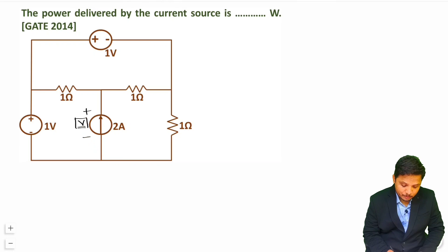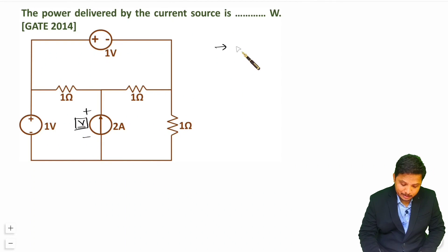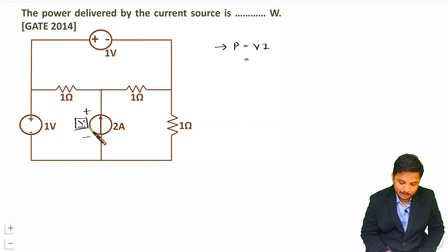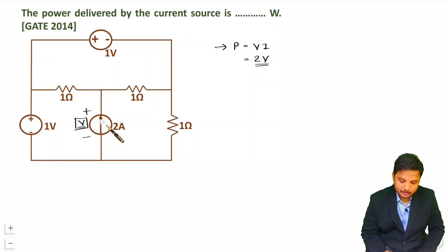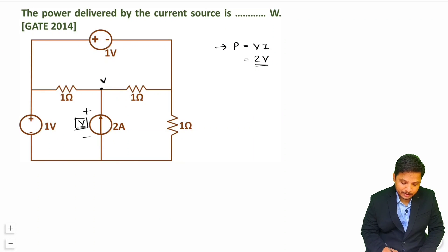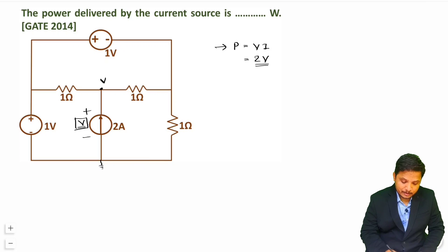If I label the voltage across the current source as V, then the power supplied by this current source is V into I, where I is 2 amperes, so power equals 2V. At this node we will have voltage V, and this is the ground.